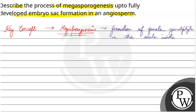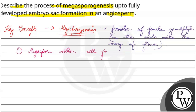This occurs inside the ovary of the flower. So let's see. First, what happens? First, there is Megaspore Mother Cell formation in the ovule — this is also called in short MMC.